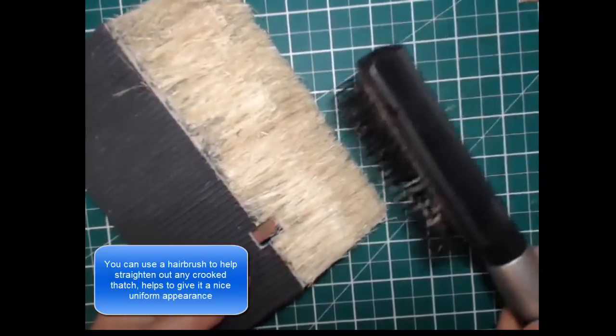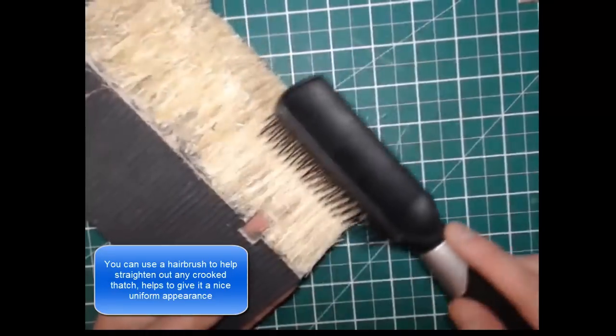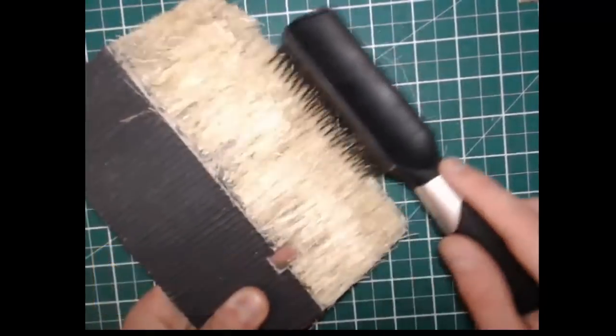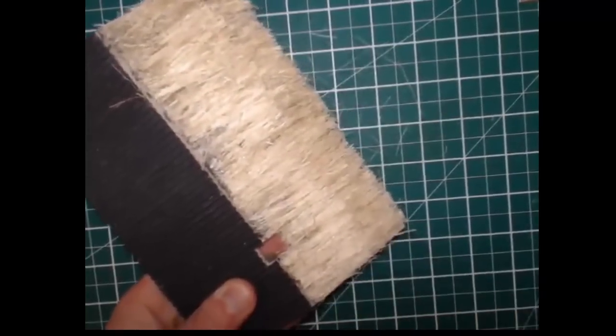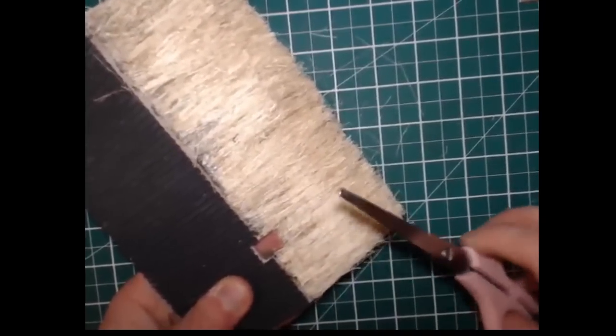It is also handy as well if you have a hairbrush or something similar lying around you can actually brush the thatch so it all runs in nice straight even lines and any odd ends that are sticking up we will just trim it off with the scissors.